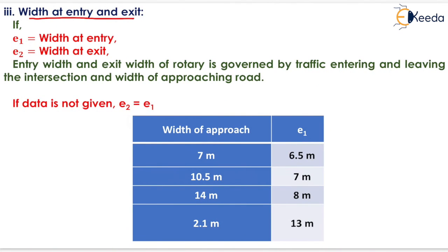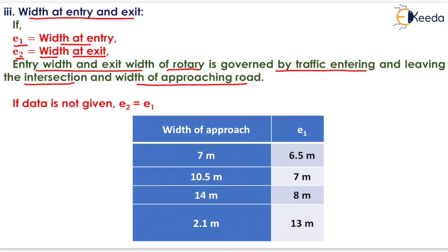Width at entry (E1) and exit (E2) of the rotary is governed by traffic entering and leaving the intersection and the width of the approaching road. If data is not given, width at exit equals width at entry. Standard values: for 7 m approach, E1 = 6.5 m; for 10.5 m approach, E1 = 7 m; for 14 m approach, E1 = 8 m; for 21 m approach, E1 = 13 m.